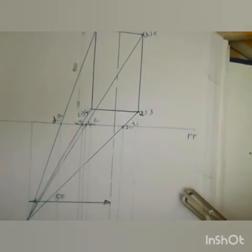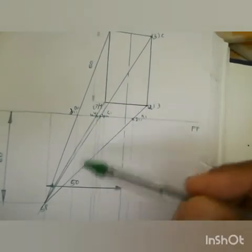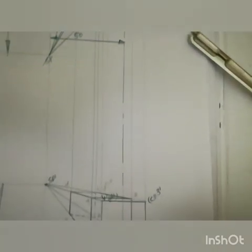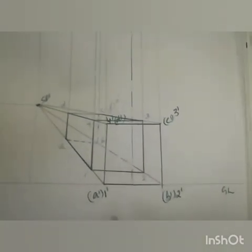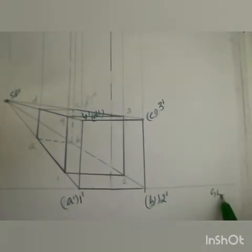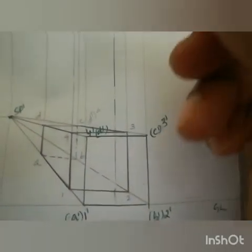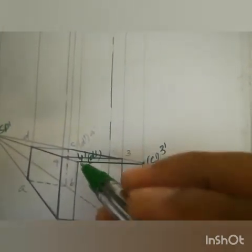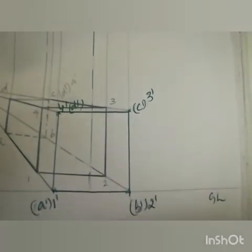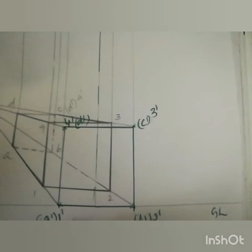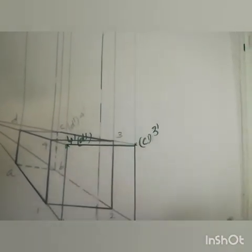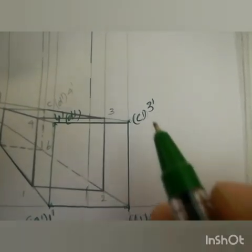Now we will draw the front view in line with the top view by projecting downward from each point. Project from each corner point downward. At a convenient place on the paper, draw the ground line first. Projecting from the top view gives the front view, showing four points: 1-dash, 2-dash, 3-dash, 4-dash as the front square face, and A-dash, B-dash, C-dash, D-dash as the rear square face.